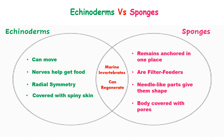Enkinoderms have nerves that help them get food, while sponges are filter feeders. Enkinoderms have radial symmetry, but sponges have needle-like parts that give them their shape. Enkinoderms are covered with spiny skin, while sponges are covered with pores.